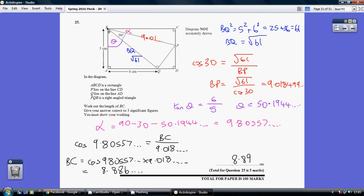I've started off by working out BQ by way of Pythagoras. BQ squared equals 5 squared plus 6 squared. So BQ is root 61.